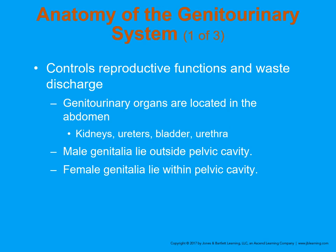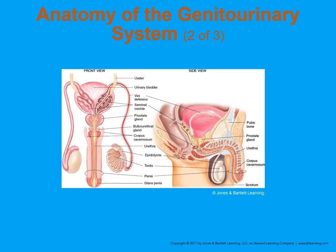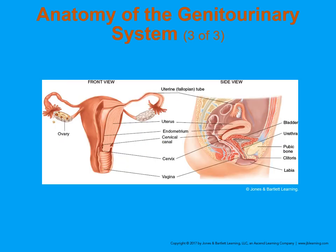The genitourinary system controls the organs of waste and discharge. It's located in the abdomen and involves the kidneys, ureters, bladder, and urethra. The male genitalia lies outside the pelvic cavity, while the female genitalia is within the pelvic cavity. An illustration shows the location of the male genitalia, and conversely the female genitalia — you can see how the female genitalia is well protected inside, whereas the male genitalia is exposed to trauma from the outside.